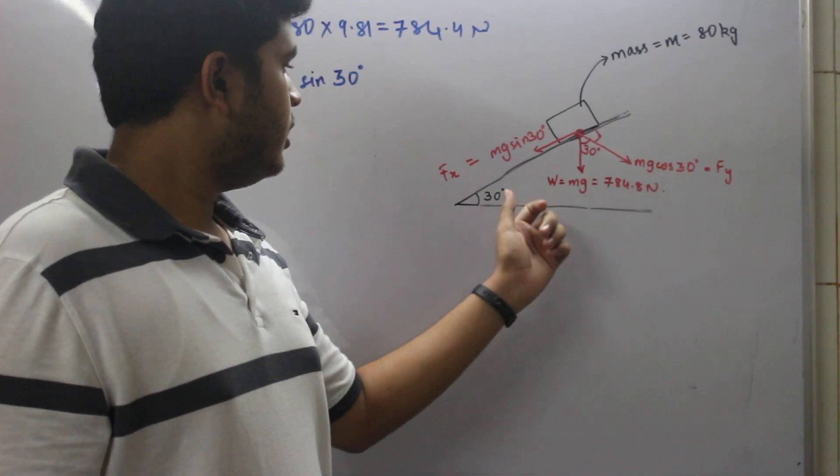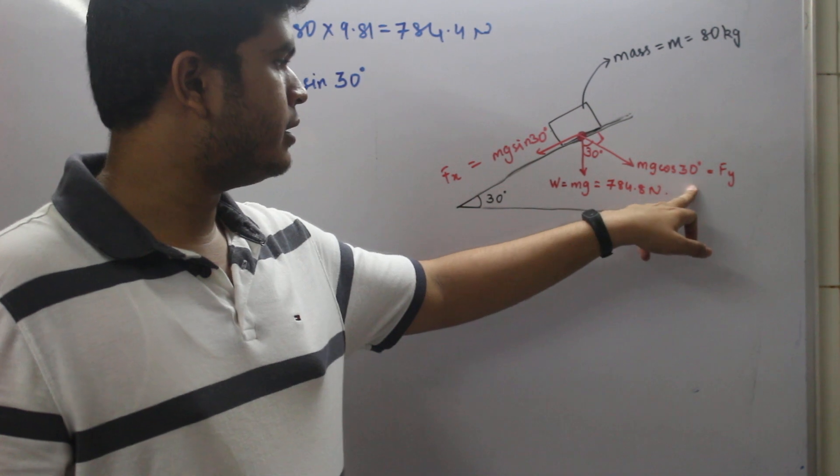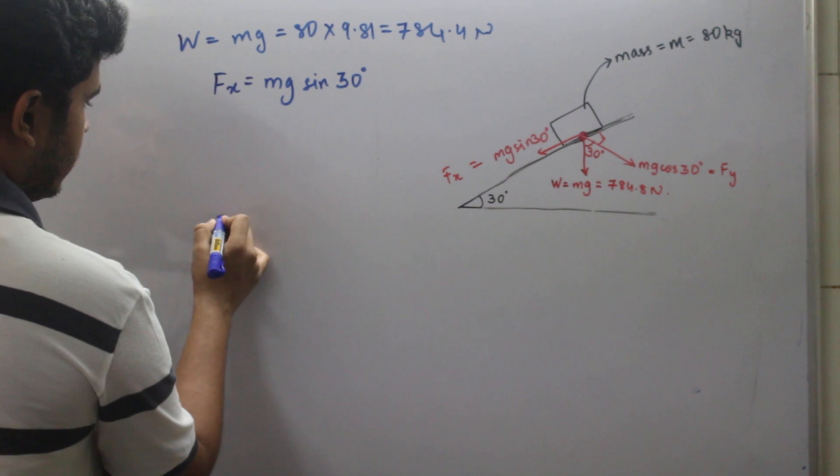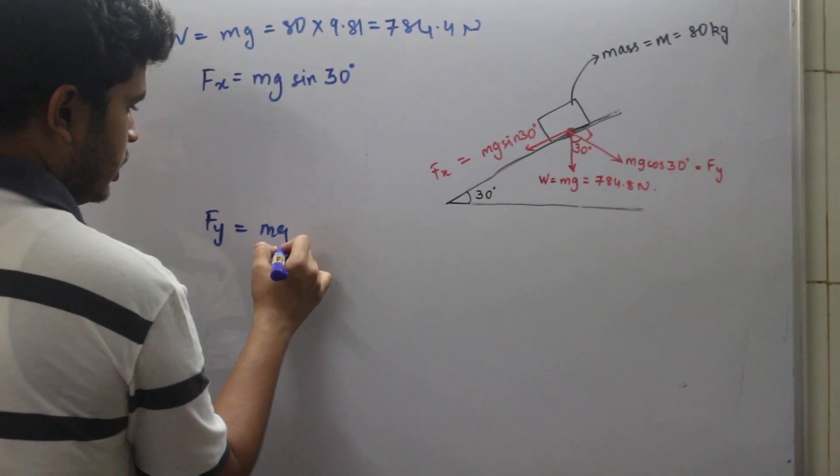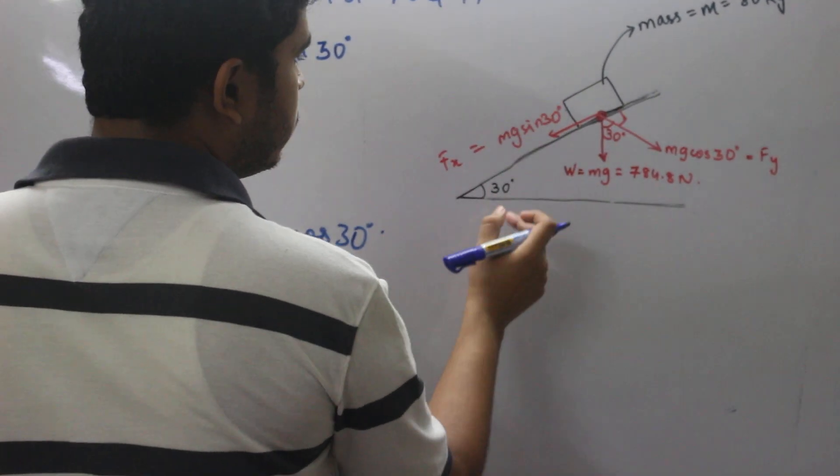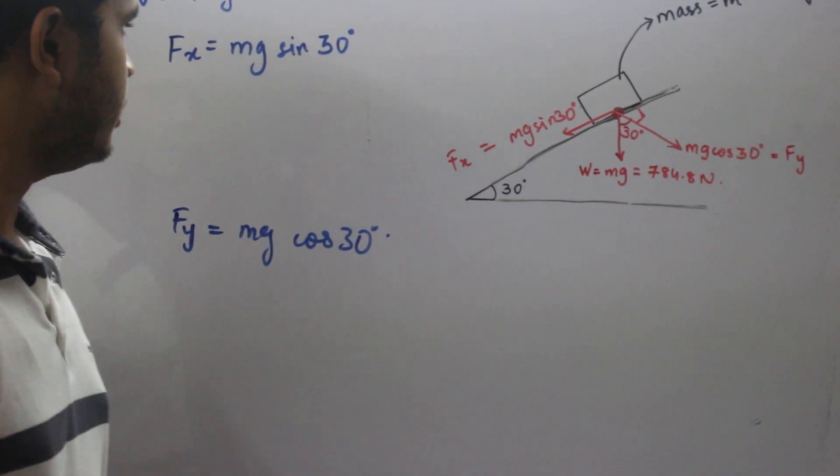mg cos theta acts at an angle theta, that is 30 degrees. So mg cos 30 is your f_y, the y component. Along the slope downwards acts mg sin theta, that is your f_x. So let's calculate f_x and f_y.